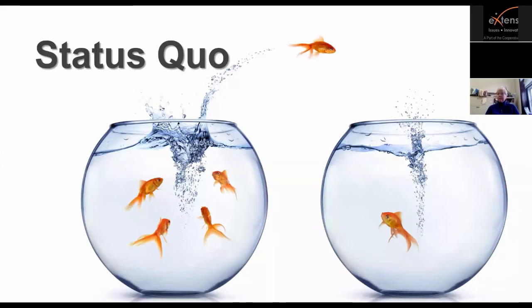The next is the status quo bias — we are hardwired to avoid change. Change is really hard because it forces us to spend mental energy rewriting those wires in our head. That's why it's really hard to get people to change their behavior. Think about January when everybody's trying to follow through on New Year's resolutions — maybe exercising more or changing their diet. It's really hard because you're already in that pattern and have those behaviors ingrained.